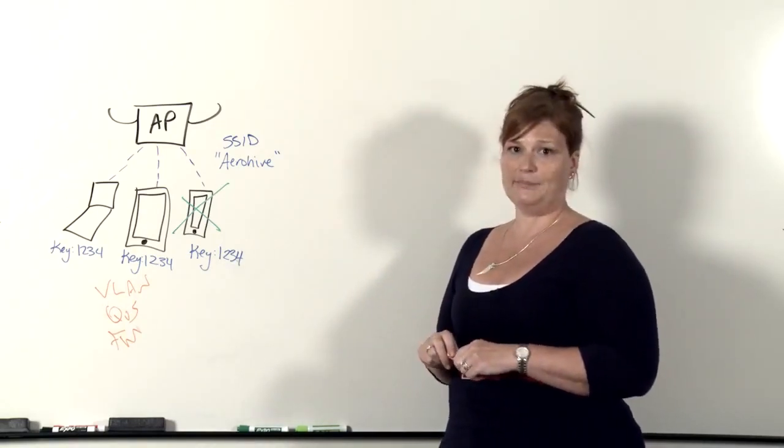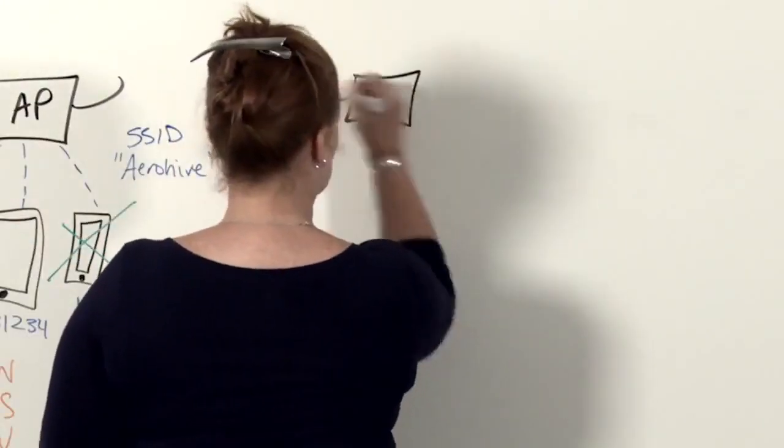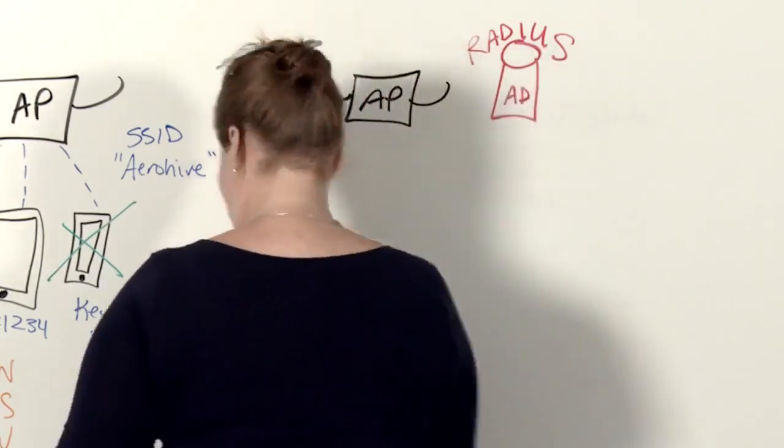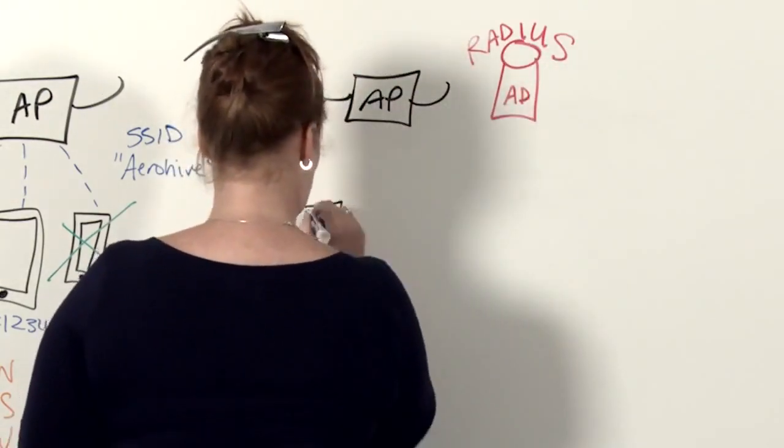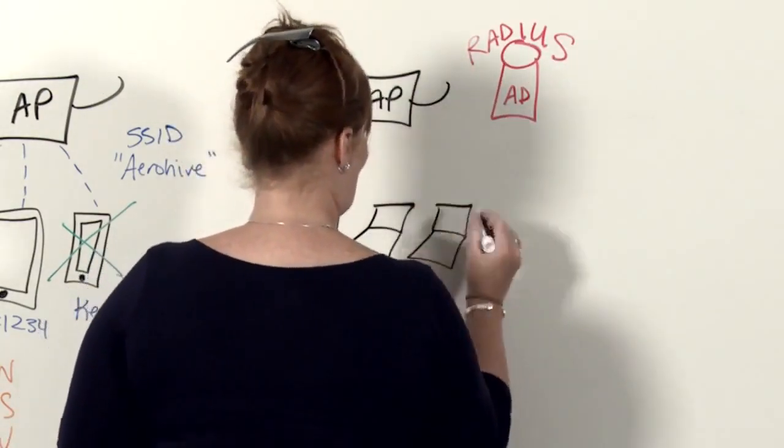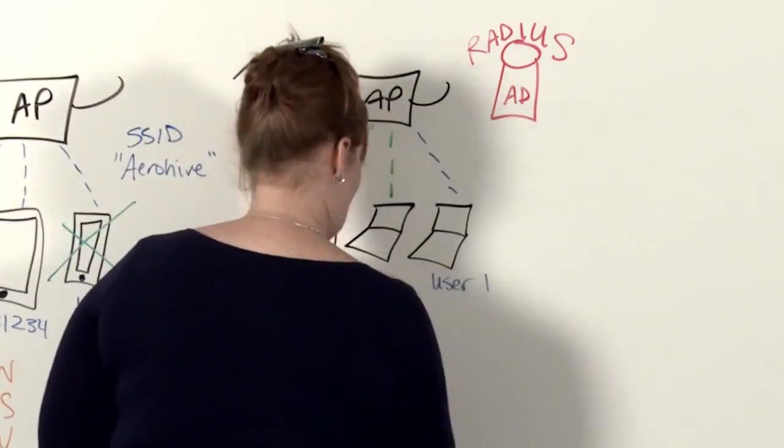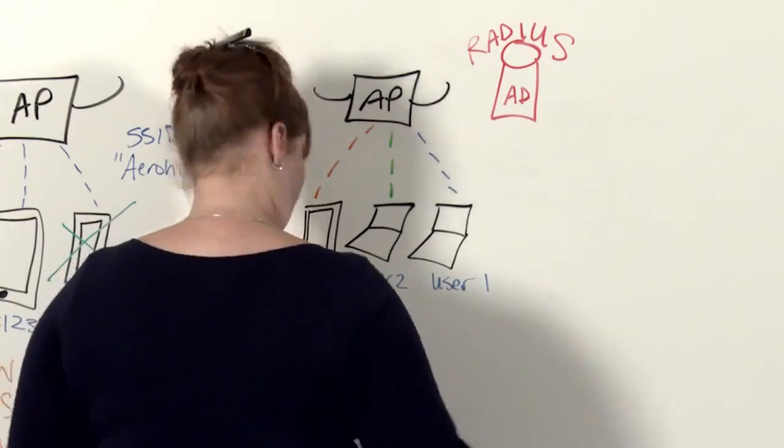So another common method for connecting clients to an SSID is using 802.1X or WPA2 Enterprise. And this is where you use some sort of user credentials, whether they're username and password or a certificate, to authenticate to the network and negotiate individual keys between the client and the access point.